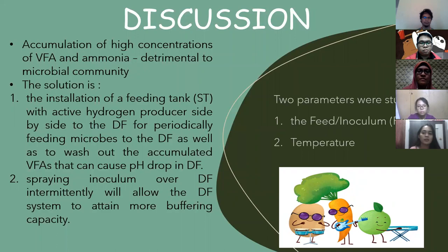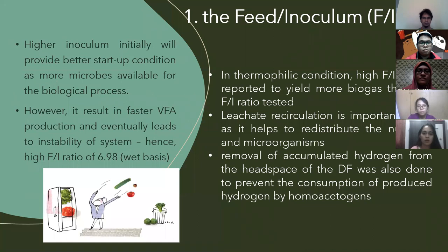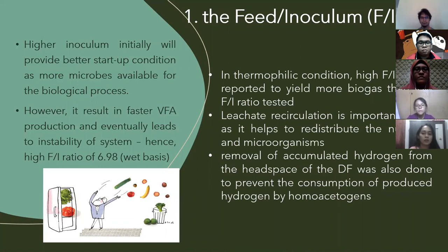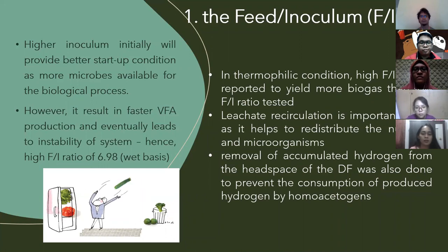There are two parameters studied: feed inoculum ratio and temperature. Under feed inoculum ratio, a higher inoculum is better as more microbes are available, but it can lead to system instability. Hence, a ratio of 6.98 was used, which can also yield more biogas. Leachate recirculation is important to distribute the nutrients and microbes. Accumulated hydrogen must be removed to prevent consumption by homoacetogens.